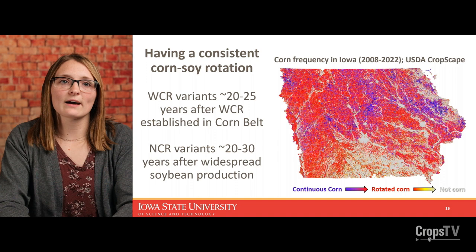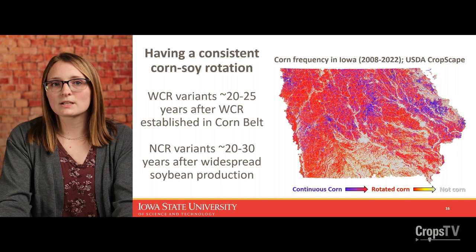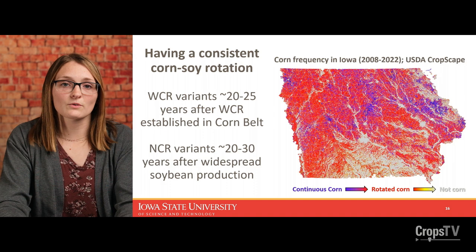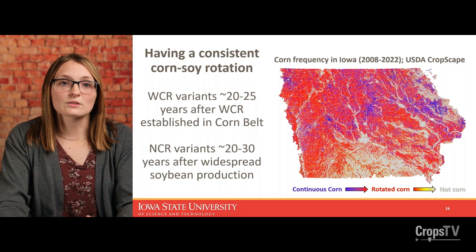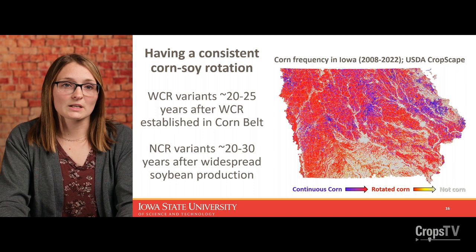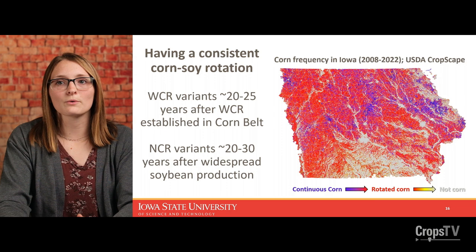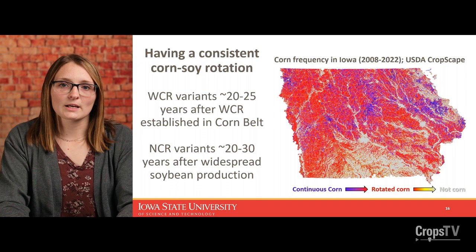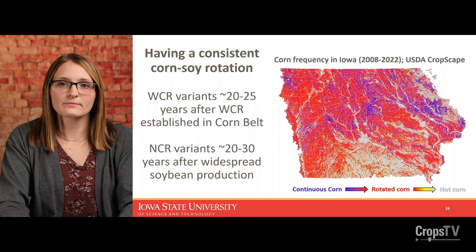What field conditions are conducive to corn rootworm variants? There's really only one — having a consistent corn-soybean rotation for an extended period of time. We've been doing this in Iowa and much of the corn belt for a really long time, primarily because of all the other agronomic benefits that come along with a corn-soybean rotation. It's not super surprising that they have found a way to overcome this, because these beetles are very, very adaptable to many of the things that we throw at them.